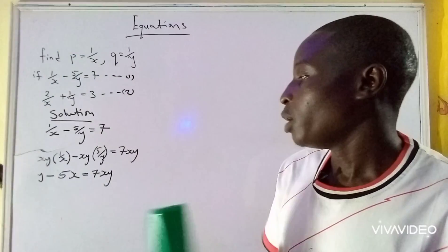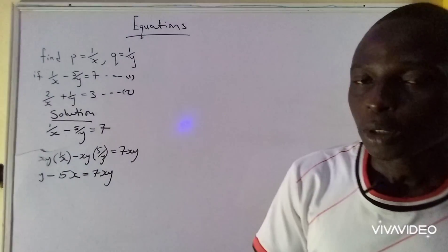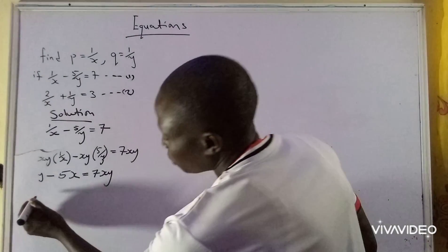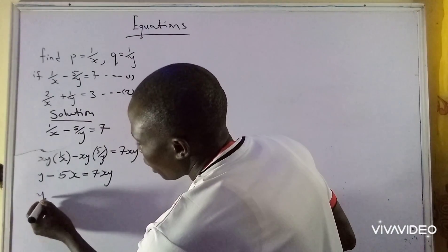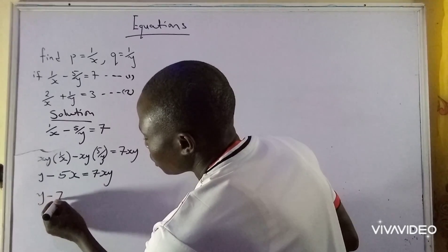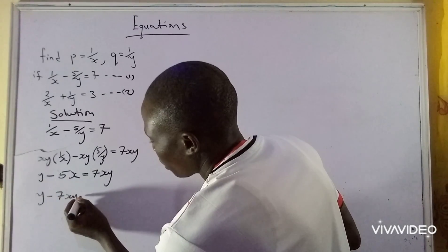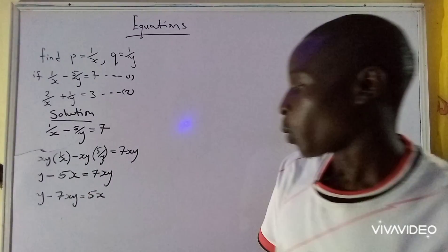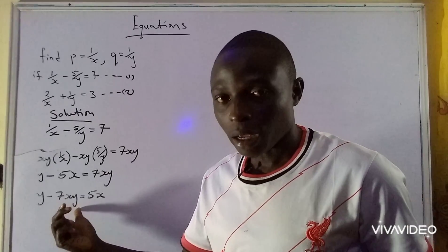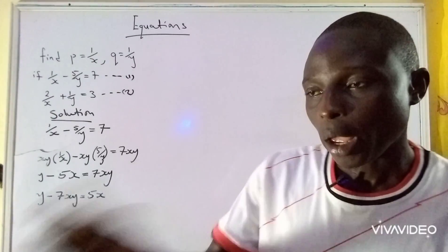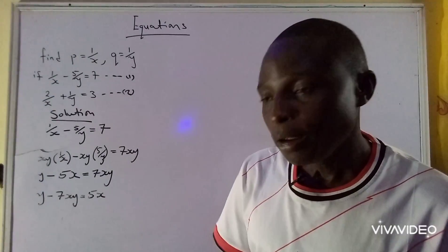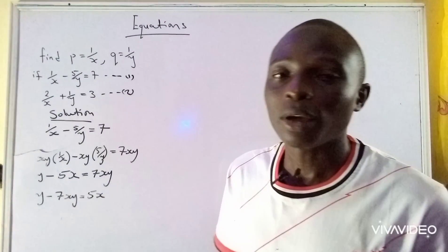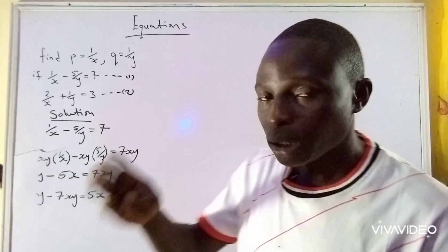From this stage, you can make either X or Y the subject of the formula. I would like to make Y the subject of the formula because of its simplicity in this case. So I can say Y minus 7XY equals 5X. I have Y here and another Y here, so I can factor Y out. To factor any variable out means to take that variable outside the bracket.